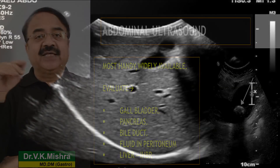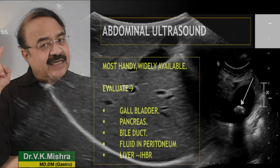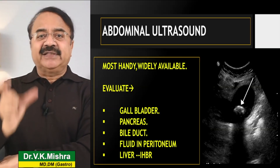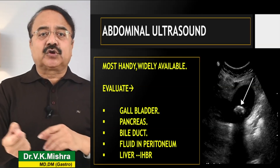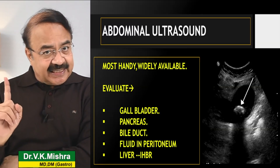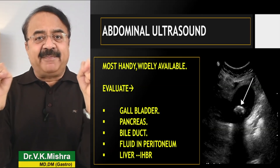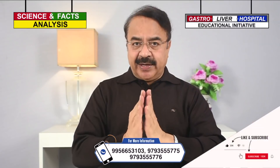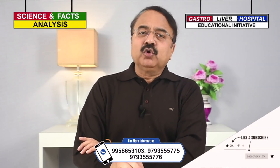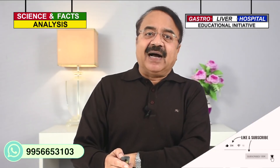Ultrasound से और भी बहुत सारी जानकारी मिलती है — gallbladder में stone तो नहीं है, pancreas की size और collection, bile duct dilated तो नहीं है, उसके अंदर कोई stone तो नहीं है, ascites तो नहीं है, और intrahepatic biliary radicals dilate तो नहीं हुए. लेकिन इसकी problem यह है कि यह operator dependent है और pancreas retro-peritoneal organ होने के चलते detail मिलने में problem होती है.